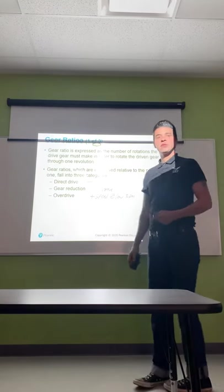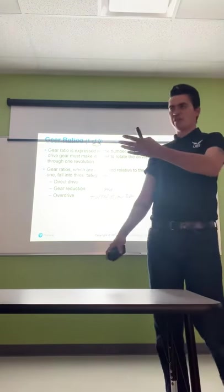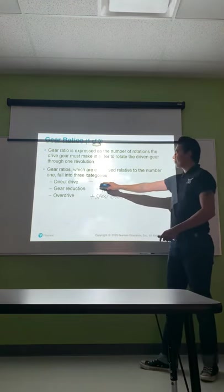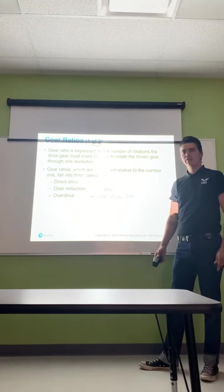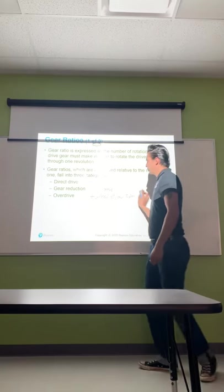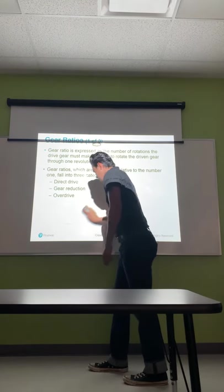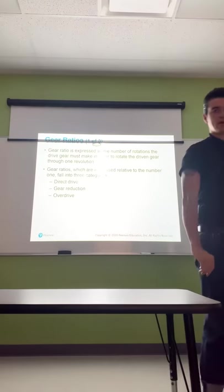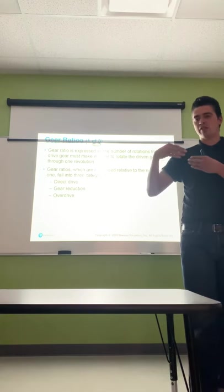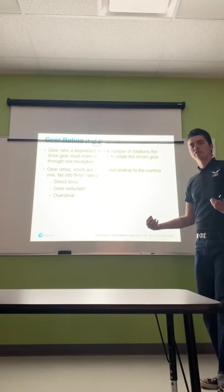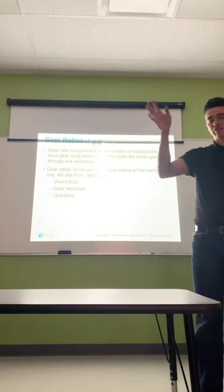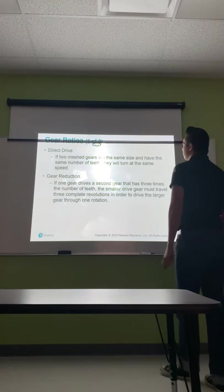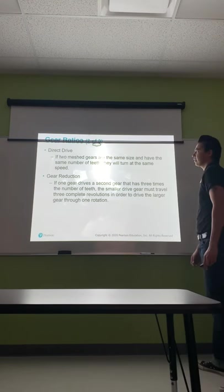Overdrive comes into play when we're cruising — say, 55 miles per hour. Without overdrive at direct drive one-to-one, the engine might be spinning at 3,500 to 4,000 RPM while only doing 55 miles per hour. Overdrive helps you get that cruising speed and also helps with top speed. You're going to be able to exceed the rotation of the transmission with the rotation of the actual differential output, so you're allowed to go faster than what the transmission can directly output.